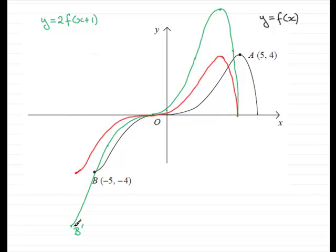But then we kept it in line here, so it's going to still have the x coordinate of negative 6. But because it went 4 down and we doubled it, it's now 8 down. So minus 6, minus 8 for that point.